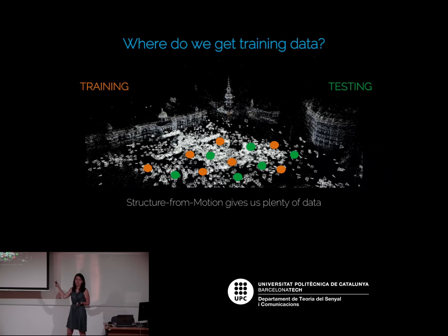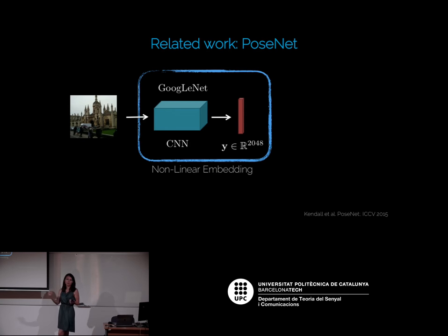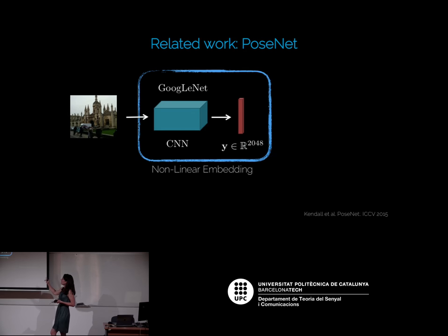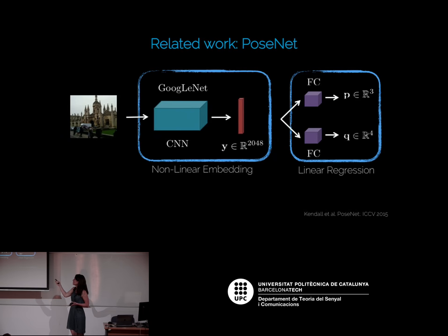We can use some of these camera positions for training and others for testing, building our dataset for visual localization. The first work applying deep learning to visual localization was straightforward: use GoogLeNet to learn a nonlinear embedding — a 2048-dimensional vector — from each training and test image, then use fully connected layers to directly predict the camera pose. The pose decomposes into position (XYZ) and rotation expressed as a quaternion, a four-value vector.